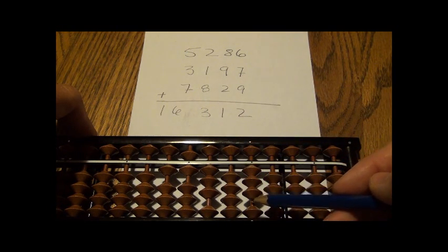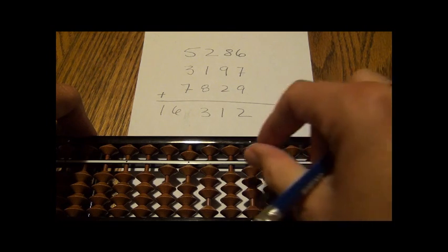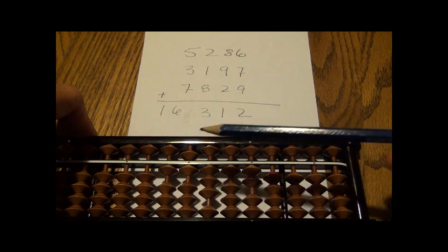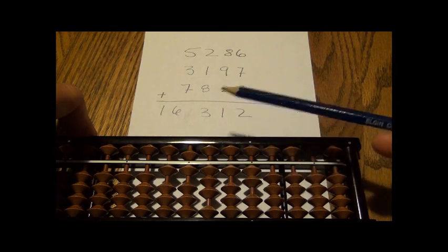Last one. Add a nine. I want to add nine here. I don't have nine beads available. Add ten. Subtract one. And I've added the three numbers together now.